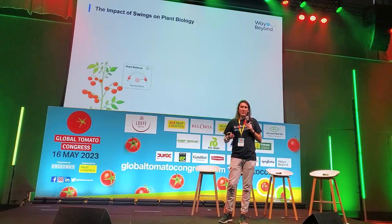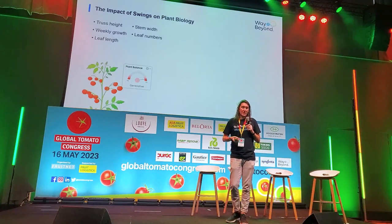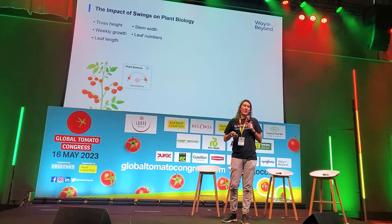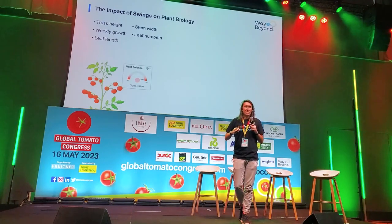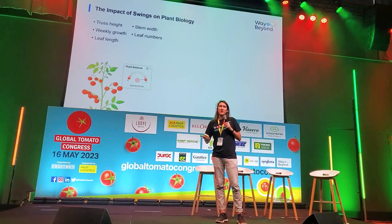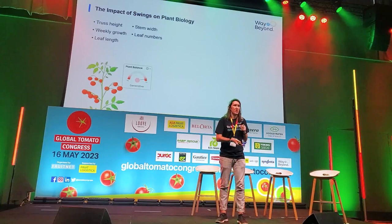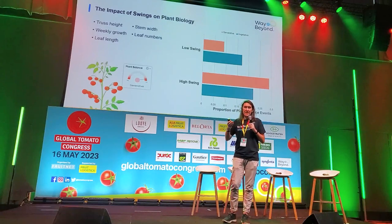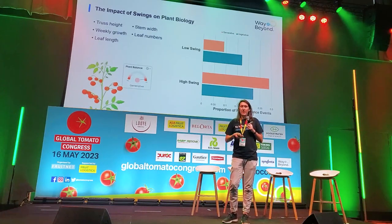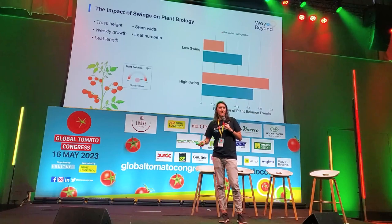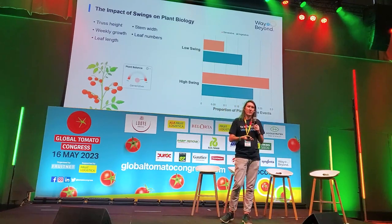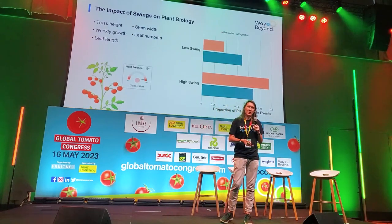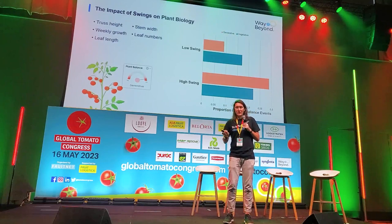Those are environmental factors, but they weren't the only thing that influences what we produce. We also looked at the impact of plant biology on swings. We specifically looked at truss height, weekly growth, leaf length, stem weight, and vegetables — measurements that give a great representation of plant state, whether it was vegetative or generative. What we found was that in the eight weeks before a low swing week, the plant spent more time being vegetative — spending energy on leaves. And before a high swing week, the plant spent more time being generative. That makes sense, but it's good to see it confirmed in data.